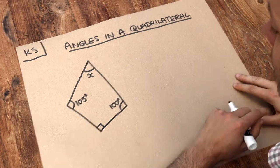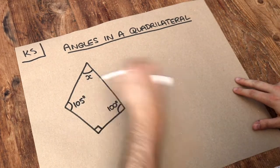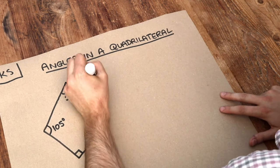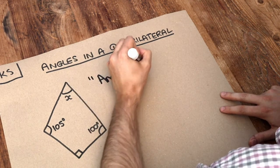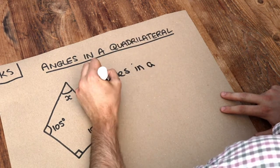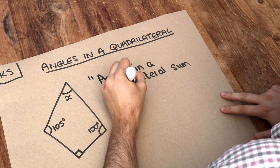And all you need to know is that the angles in a quadrilateral sum to 360 degrees. Let me write that down. Angles in a quadrilateral sum to 360 degrees.